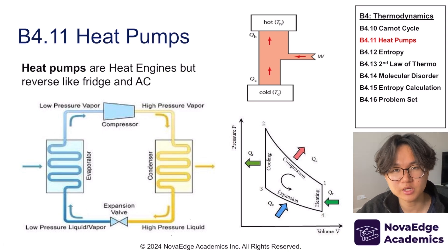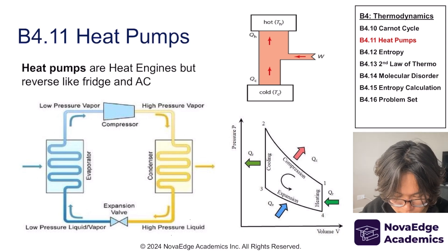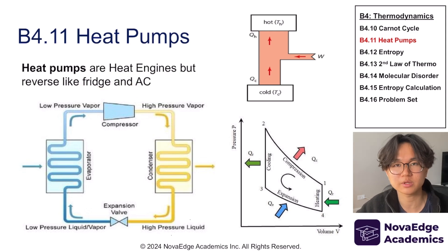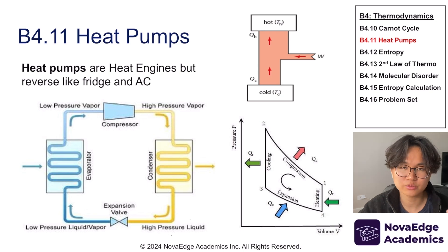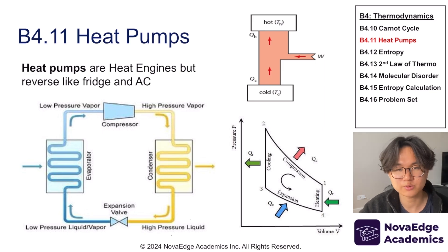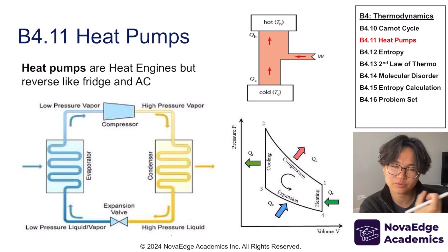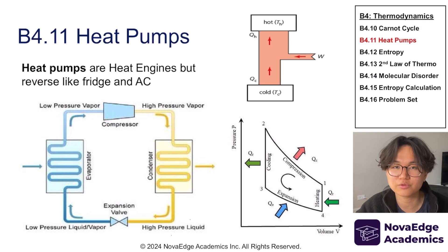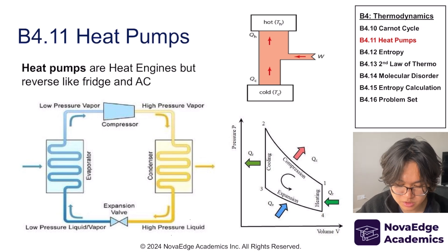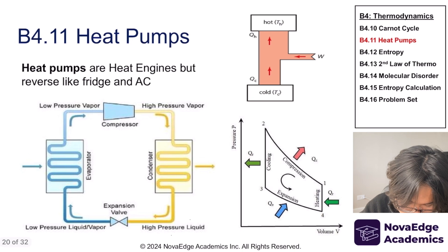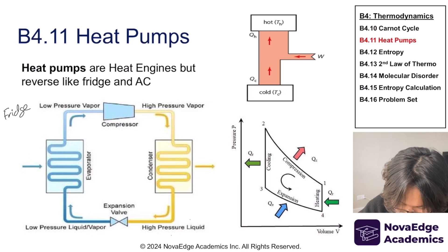Now I'm going to talk about heat pumps, which you need to know conceptually for Paper Two. Heat pumps are just heat engines in reverse, used in things like fridges and air conditioning where you want to cool something down. The question is: how do you cool a fridge when the room temperature is higher than inside the fridge? Heat always flows from hot to cold — that concept never changes. So how do you actually cool the fridge? Let me explain the heat pump thermodynamic cycle.